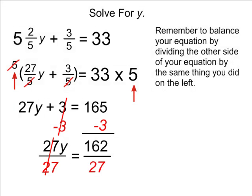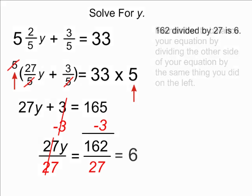we take the number on the right-hand side of our equation which is 162 and divide that by 27 as well. Because whatever you do to the left-hand side of your equation, you must do to the right-hand side as well. After dividing 162 by 27, you should come up with a solution of 6.